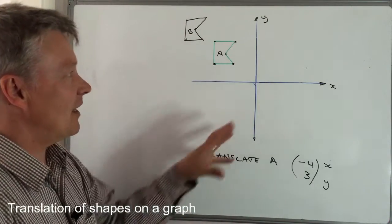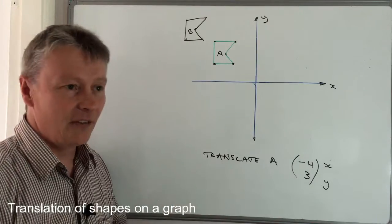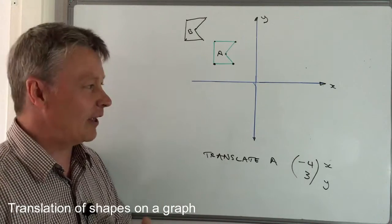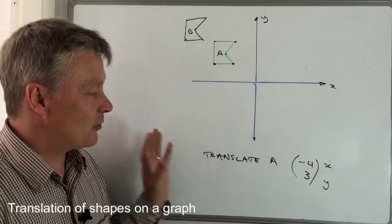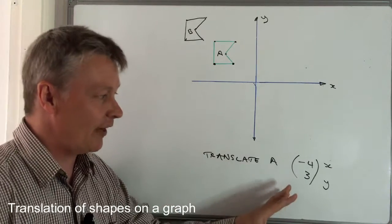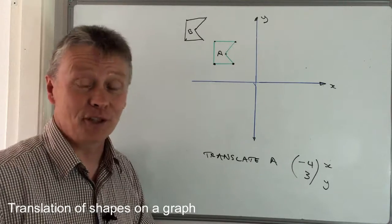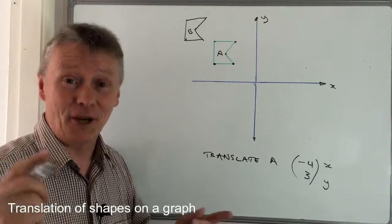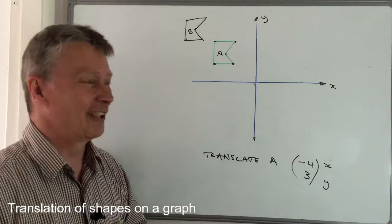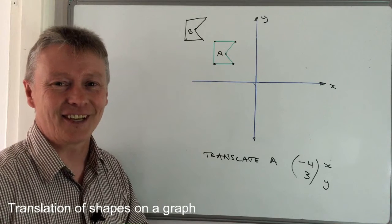That's an answer to the kind of question you're going to get, probably around about B grade, something like that - translating a shape by a vector with a negative number in it. I hope it's been helpful to you. Please do like, comment, subscribe, and I look forward to seeing you inside the next video.